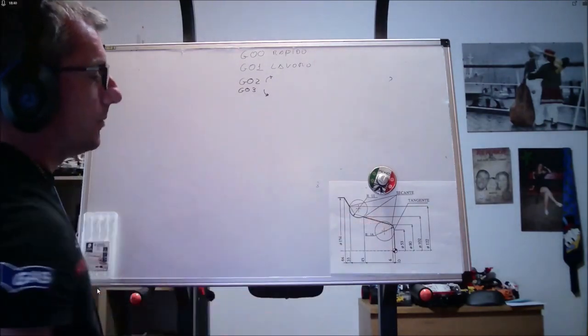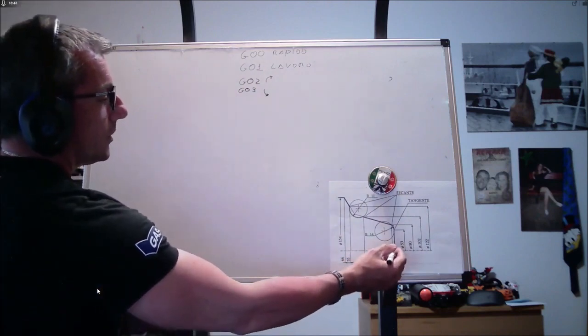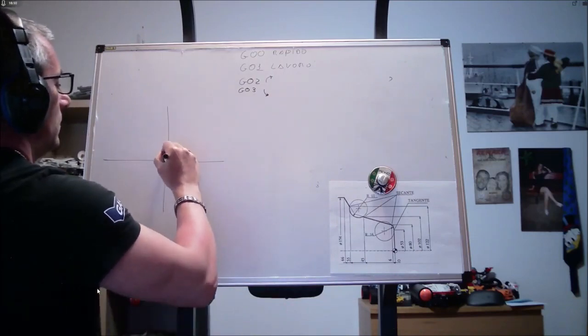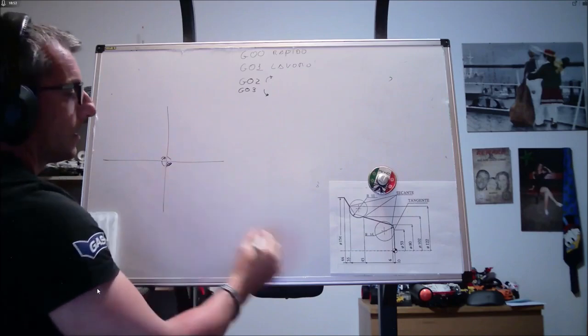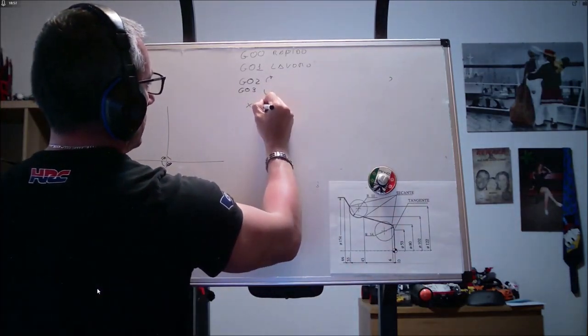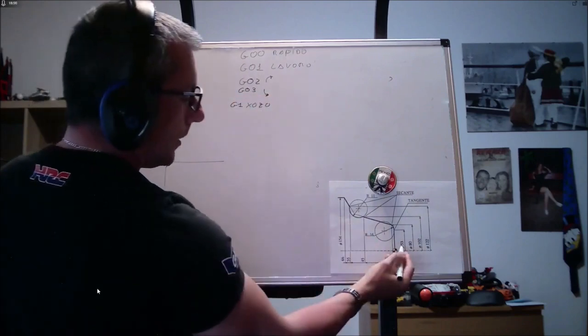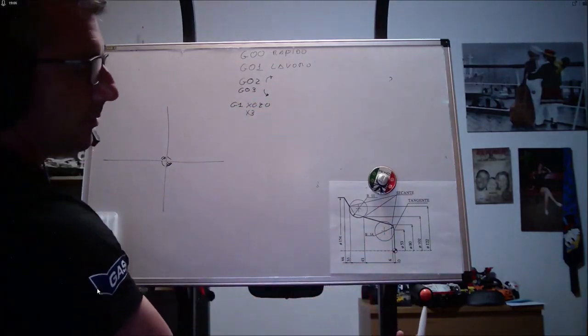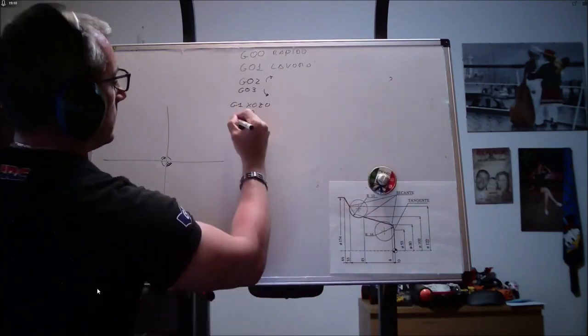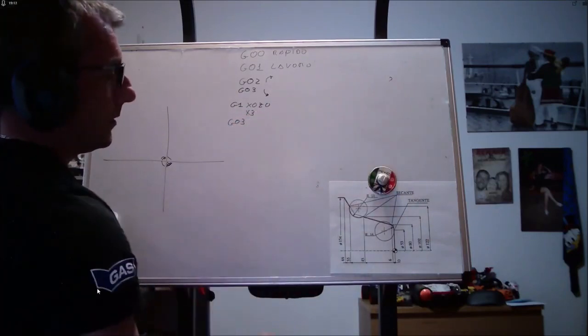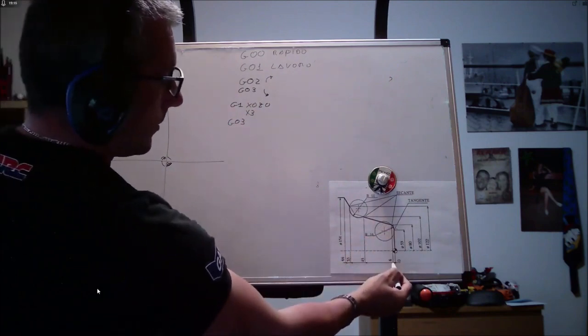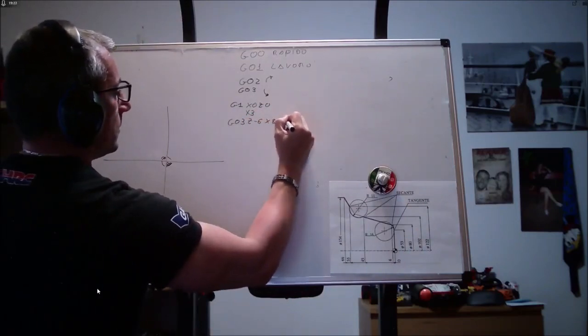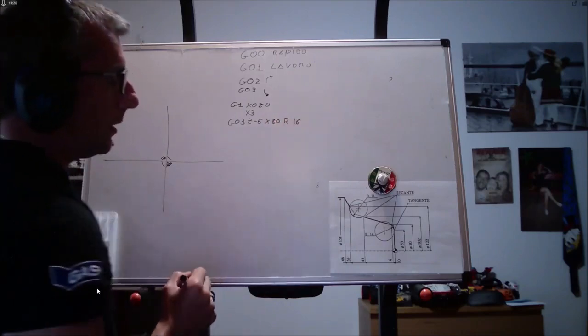Adesso facciamo la programmazione di questo pezzo. Sempre preoccupandoci solo di G1, G2 o G3. Allora, partiamo sempre da X0, Z0, G1 e andiamo a X53. Poi, abbiamo un raggio da percorrere in senso anti-orario. G03, Z meno 6, X80. E qua, ci mettiamo la nostra R16.